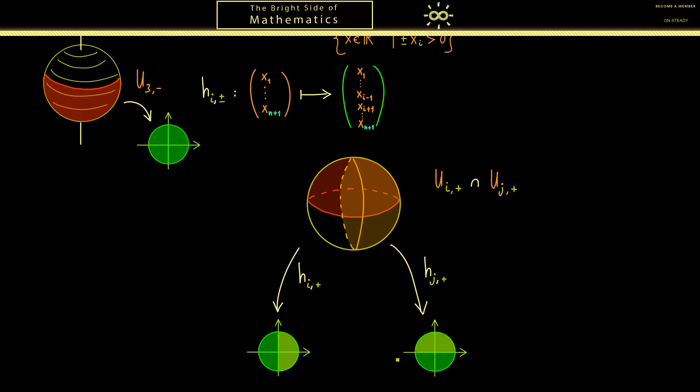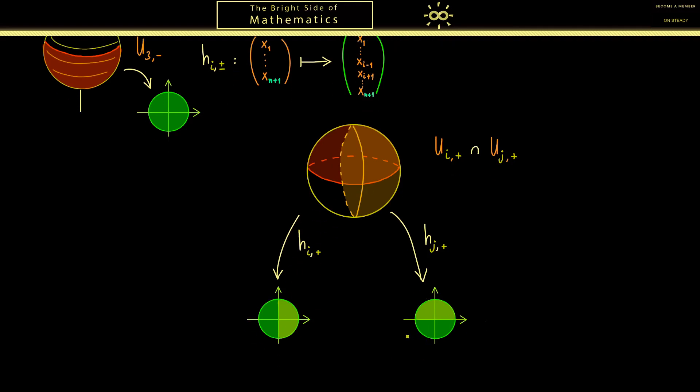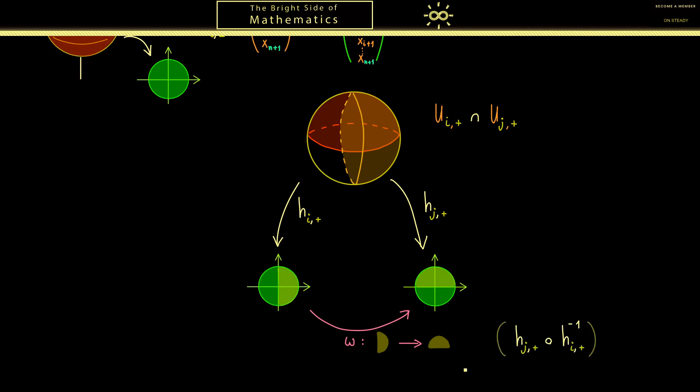Now please recall the transition map we are interested in is the map that sends this half disk to this half disk. And usually we call such a transition map omega. It's the map from left to right, which means first we apply h_{i,+} inverse and then h_{j,+}. So we have this composition of the two maps restricted on that domain.